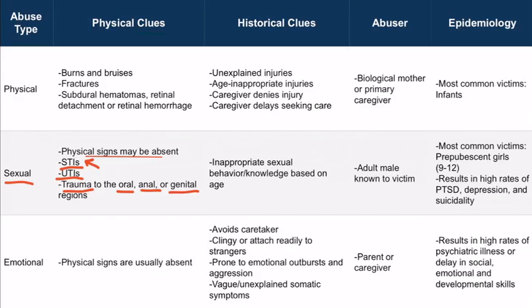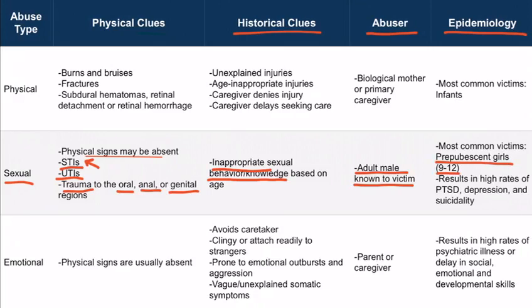Another red flag for sexual abuse can be gathered from the history. If the child has inappropriate sexual behavior or knowledge based on their age — in other words, they know too much or have done too much for their age — that is a red flag. The abusers or perpetrators of sexual abuse are most likely to be a trusted adult male, not necessarily a stranger. Victims are most commonly prepubescent girls between the ages of 9 and 12, and they're at very high risk of developing PTSD, depression, and suicidality. Adequate initial care and follow-up are vital to positive long-term outcomes.